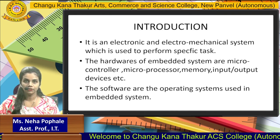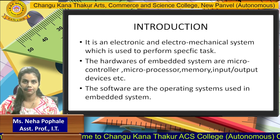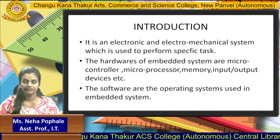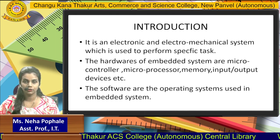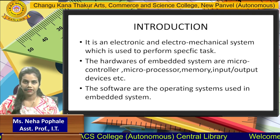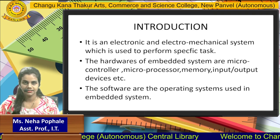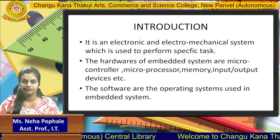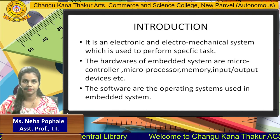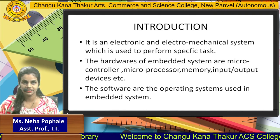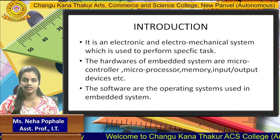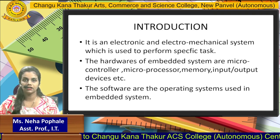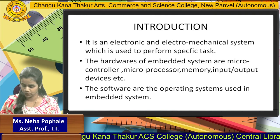Coming to the hardware of the Embedded System, the hardware that an Embedded System may have includes a microprocessor, microcontroller, memory, and input-output devices. The software an Embedded System may have is an operating system, also called firmware, where the code or instructions are stored.